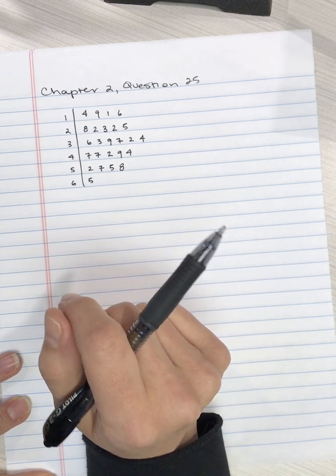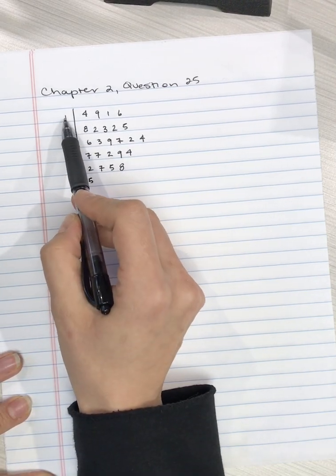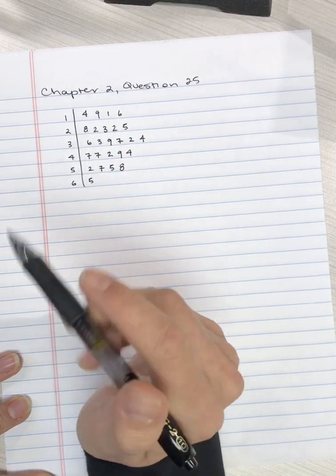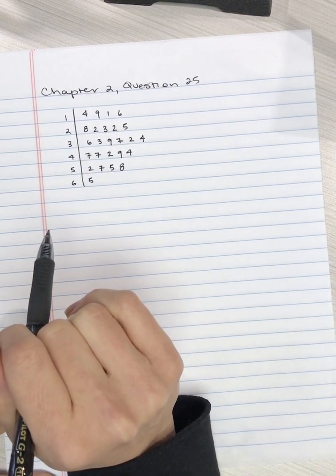We can figure out what the highest score is, 65. We can see the lowest score is 11. So we can get a lot of information from a stem and leaf display.